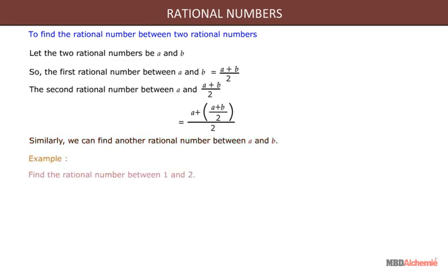In this example, we will find the rational number between 1 and 2. Solution: the rational number between 1 and 2 is 3 upon 2.